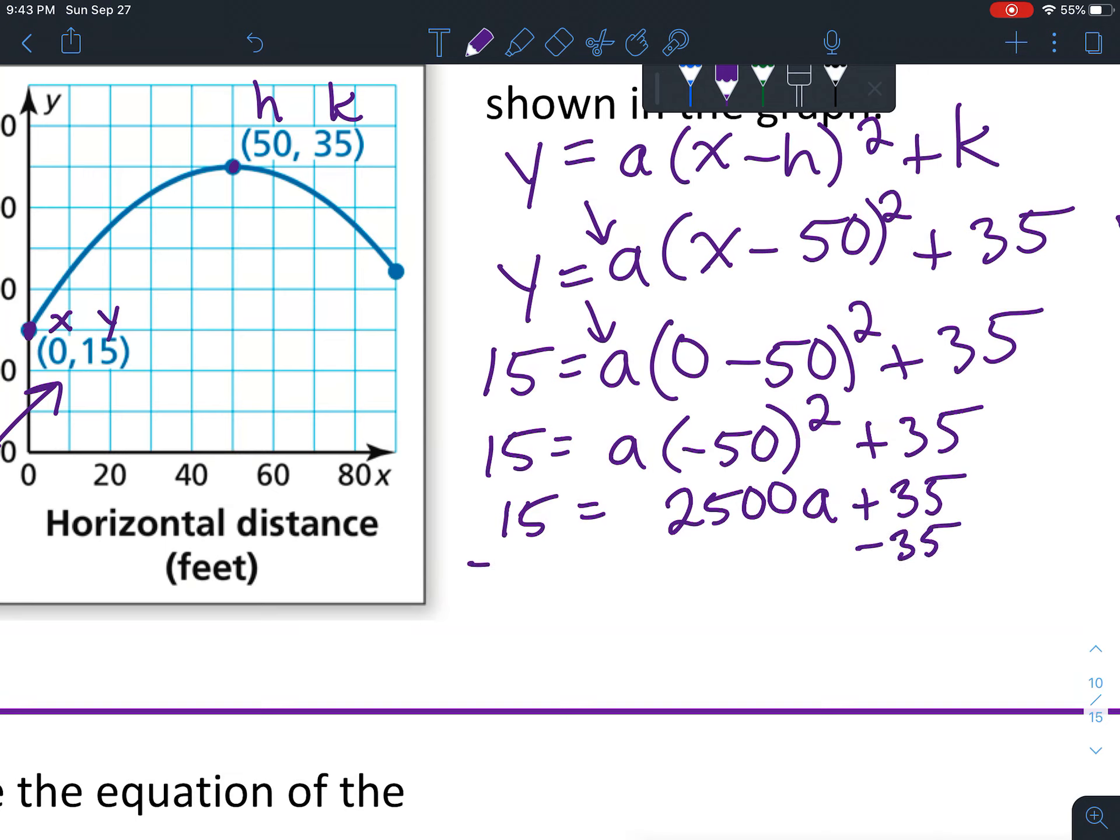Subtract 35 from both sides, and we get 15 minus 35 - different signs, we subtract and get negative 20 equals 2500a.